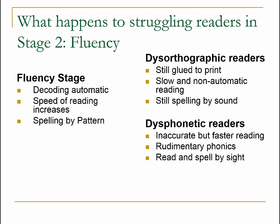What happens to struggling readers in Stage 2 fluency? In the fluency stage, which happens in second and third grade, decoding becomes automatic, the speed of reading increases, and kids move into the spelling-by-pattern stage, where they understand that the sound 'kuh' can be spelled in different ways. At this point, dysorthographic readers are still glued to print — still slow, still not automatic because they're decoding over and over, and still spelling by sound.